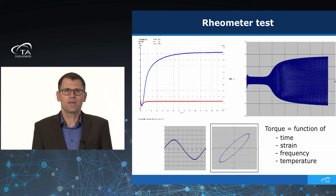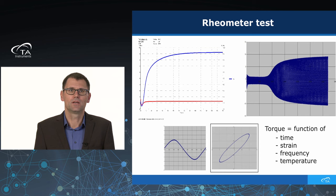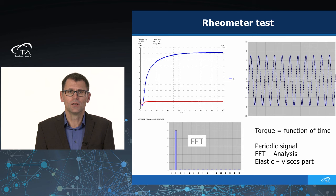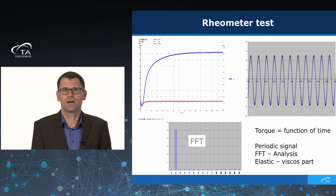I want to go a little bit more in detail on a rheometer test. Because of the frequency, every 600 milliseconds we measure a sine wave of stress and a sine wave of strain. You can plot a sine curve as a function of time, or plot stress over strain to get an ellipse. The torque is a function of time because the curing behavior is starting during the test. Torque is also a function of strain — higher strain gives higher torque, higher frequency gives higher torque, and temperature is also very important. We can use a Fourier analysis to split the periodic signal into an elastic part (S prime) and a viscous part (S double prime).